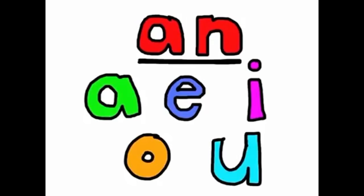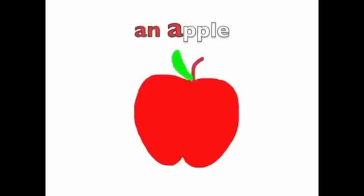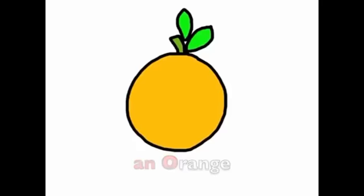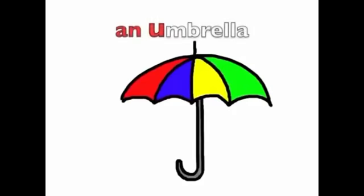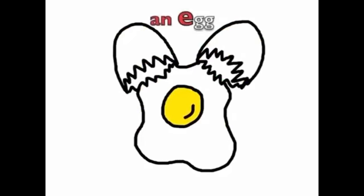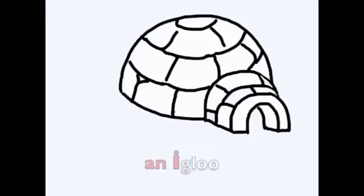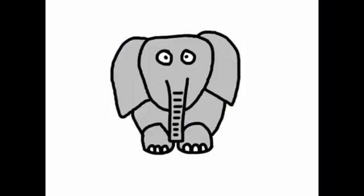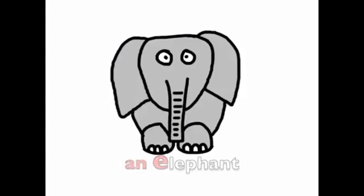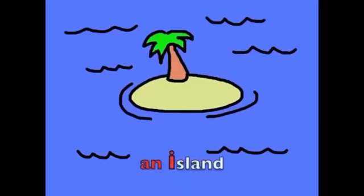An apple, an orange, an umbrella, an egg, an octopus, an eagle, an elephant, an island.